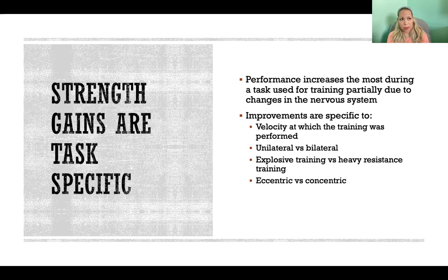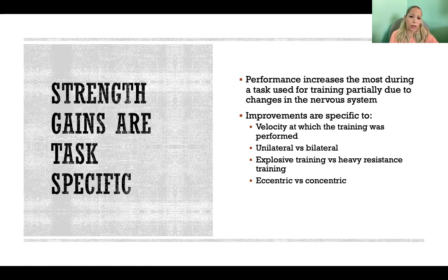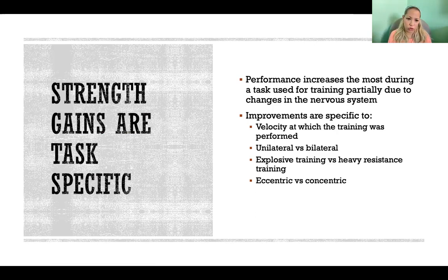Depending on whether the task is done at a high velocity or a low velocity, the improvements to the nervous system are going to be very specific to the velocity at which training took place. If somebody is strength training and always doing it pretty fast, they're not necessarily going to have the same strength gains at a slower velocity as they do at the fast velocity they're accustomed to working at, and vice versa. So if you're looking for overall strength gains at any velocity, that means varying the velocity you use during training — maybe a fast week then a slow week, or varying every other workout or exercise.